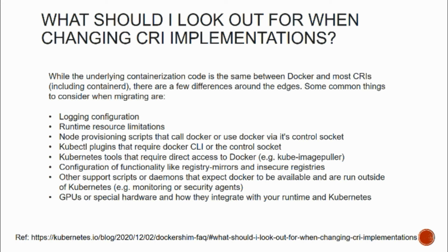If you're using managed Kubernetes like AWS EKS, Azure, or Google GCP, you don't have to worry much - most of this will be handled by them. For example, in AWS they'll provide a new AMI containing the new runtime. Also watch out for Kubernetes tools or plugins that require direct access to Docker - if you're using additional plugins specific to Docker, you may need to find alternatives. Check if the runtime needs any special hardware. Most of these will be well-aligned to the current Docker runtime, which is containerd, so there's no need to panic too much, but do look for these when evaluating a container runtime.